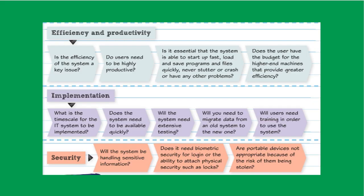The next factor you can talk about is implementation, which is a bigger deal for businesses than other types of users. If a business is looking to implement new IT systems, training is a big deal because it takes time and money. They also need to think about their data — if they have old machines with data stored, they need to consider how they're going to move that data to the new systems and how long it will take.